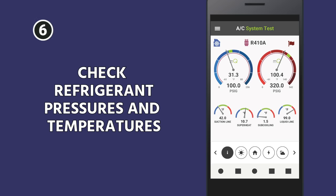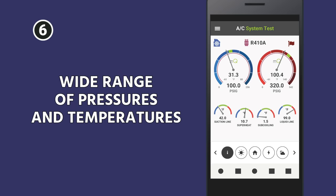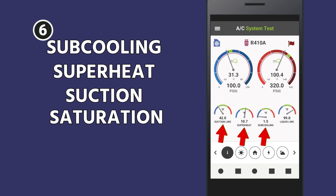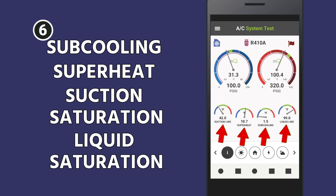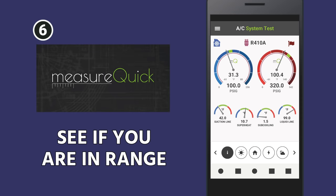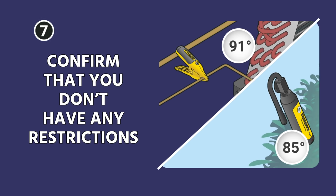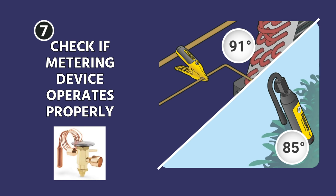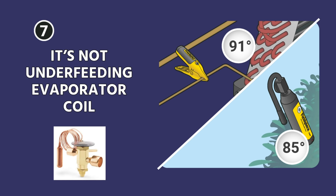Once you're done with that, you want to check your refrigerant pressures and temperatures. Check your subcooling, your superheat, your suction saturation, your liquid saturation. A really good tip is to use the MeasureQuick app to make it easy and see if you are in range. You want to confirm that you don't have any restrictions — things like a temperature drop across a liquid line filter dryer. You also want to check and make sure that your metering device is operating properly and that it's not underfeeding the evaporator coil.